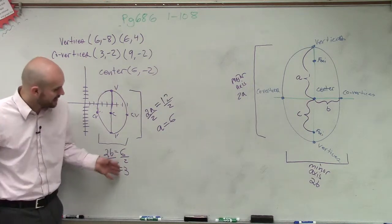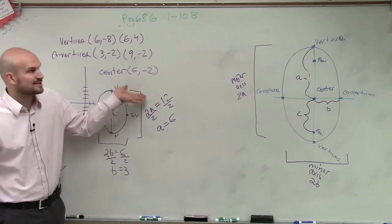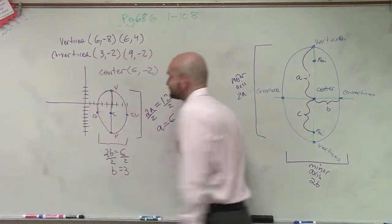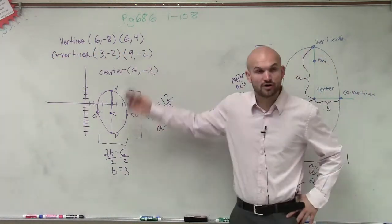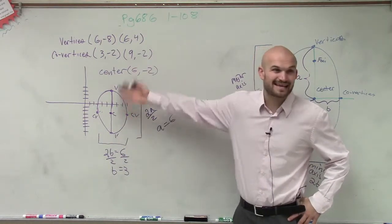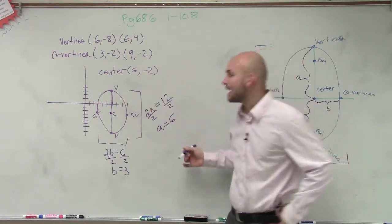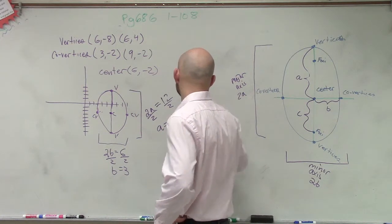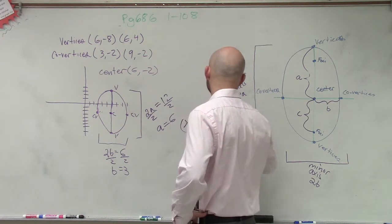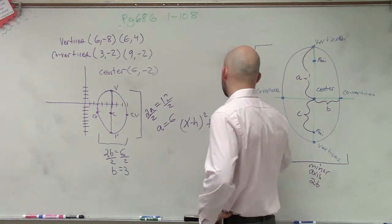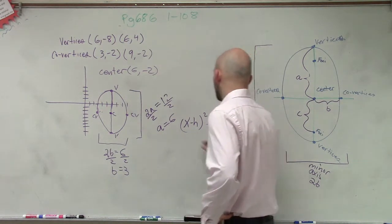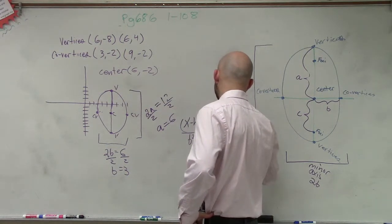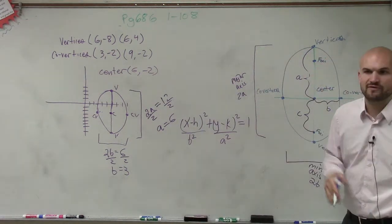So now, ladies and gentlemen, I know that I know b. I know a, and I know the center. Is it possible now for us to write the equation? Yes. And we know that since it's vertical, we know that our major axis a is going to be under our y. So our formula we need to make sure we use is (x minus h)² over b² plus (y minus k)² over a² equals 1. So now we just plug in our values that we know.